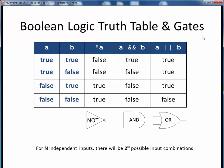By way of review, here is the truth table for all three logical operators, along with their symbolic logic gate representations. A truth table simply summarizes the logical output values for all possible combinations of logical inputs. For N independent input values, there will always be 2^N possible combinations of those inputs. So for these two inputs, A and B, these are the four possible input combinations. All of the inputs are now Boolean values, either true or false. The not operator simply inverts or flips its input value — if the one single input A is true, the output will be false, and if the input A is false, the output will be true.